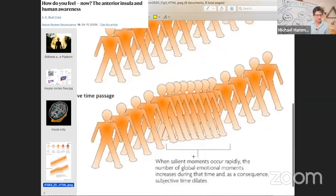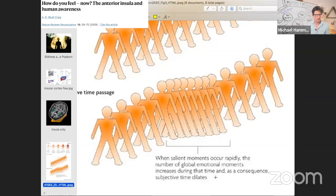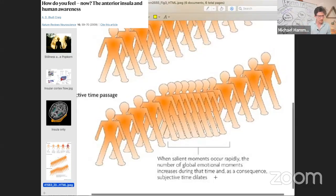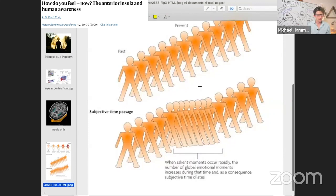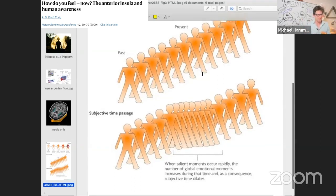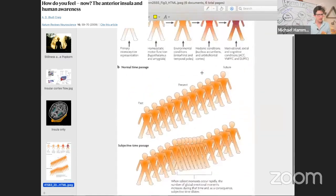So when highly salient moments occur, the global emotional moments increase during a period of metrical time, and then the subjective time passage is greater. It feels like some moments, this night could last forever. That's Billy Joel experiencing a dense succession of emotionally salient experiences. This is from Bud Craig in 2009.